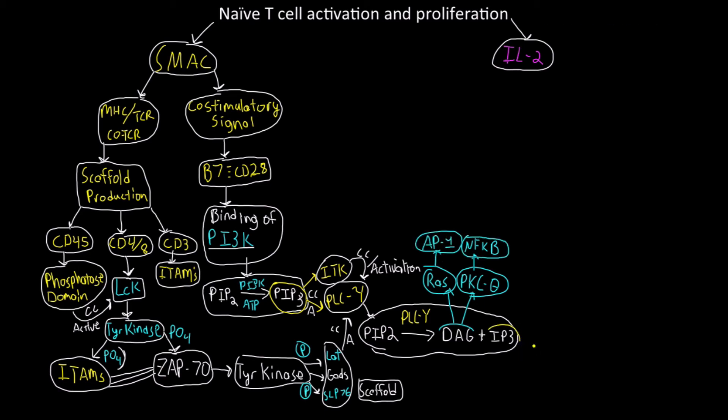Switching to IP3, I expect you to know that IP3 always is going to cause the release of cytoplasmic calcium in a controlled release, and this is going to end up activating a compound known as calcineurin. Calcineurin is a calcium-activated phosphatase which ultimately results in the production of NFAT. NFAT is nuclear factor of activated T-cells.